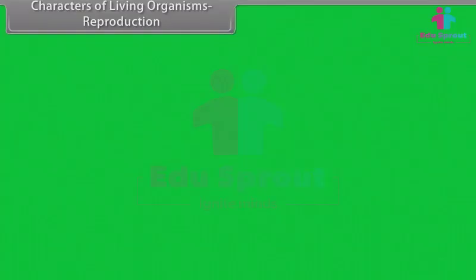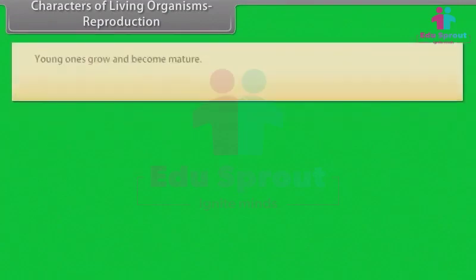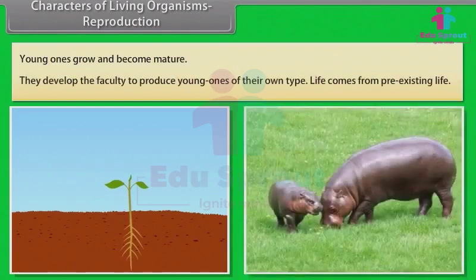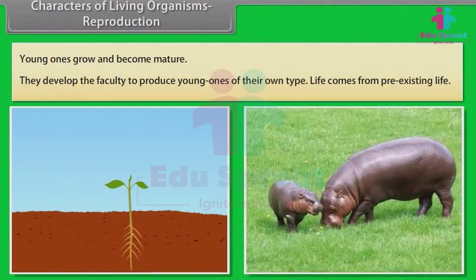Reproduction: Young ones grow and become mature. They develop the faculty to produce young ones of their own type. Life comes from pre-existing life.